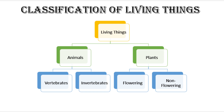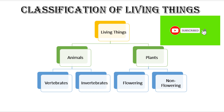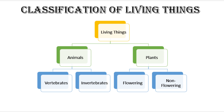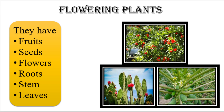Aristotle mainly divided all organisms into two groups: plants and animals. In the previous video we discussed animals, and today we are going to talk about plants. Plants are further divided into two groups — flowering and non-flowering. Flowering plants are the most advanced group of plants in the plant kingdom. These plants have flowers, fruits, and seeds inside the fruits.